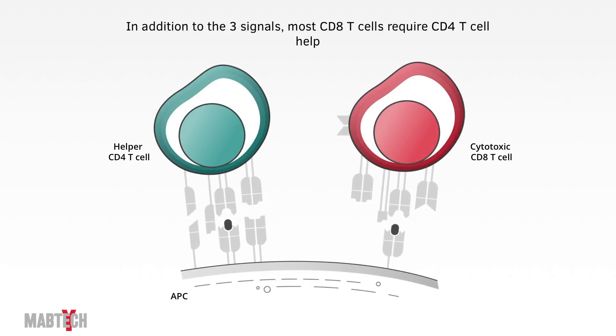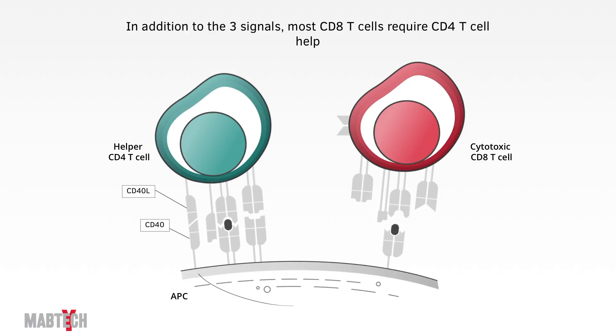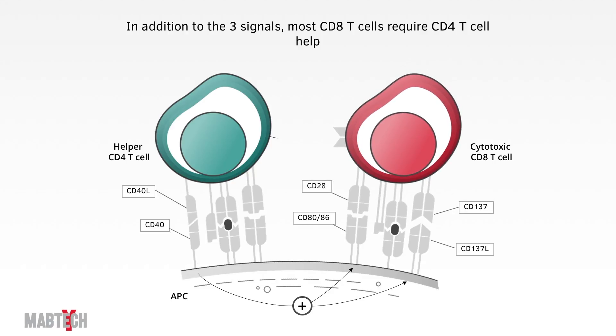CD8-positive T-cells, since they are cytotoxic, meaning that they are cell killers, meaning they are super dangerous if they attack the wrong cell, have an even higher activation threshold. They often need CD4 help in the form of CD40 ligand binding to CD40 on the antigen-presenting cell. And, in addition, the CD4-cell produces extra IL-2, which the CD8 likes. Boom! The CD8-T-cell is ready.